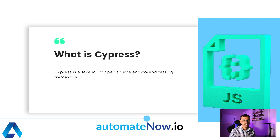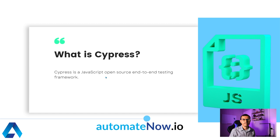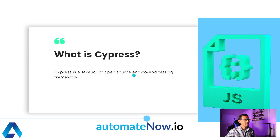First, we'll have a look at the definition. Cypress is a JavaScript open source end-to-end testing framework. JavaScript means that Cypress runs on a Node.js server, which also means that we can only use JavaScript in order to write our tests. Open source means that this is open to the public — anyone is welcome to contribute to the framework. And end-to-end testing means that we're generally going to be doing integration testing as opposed to unit testing with this type of framework.